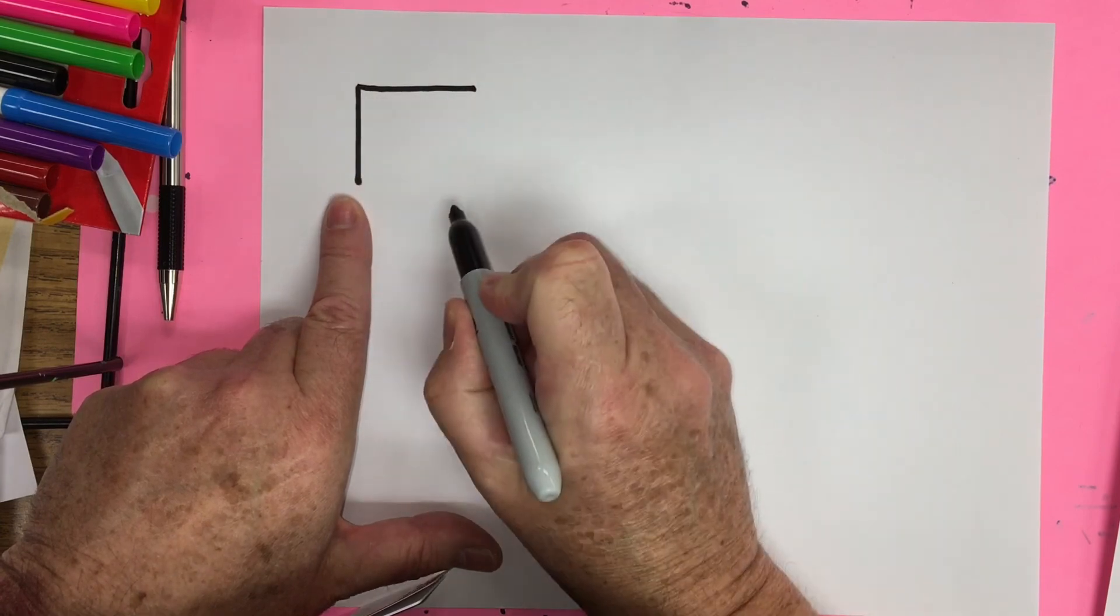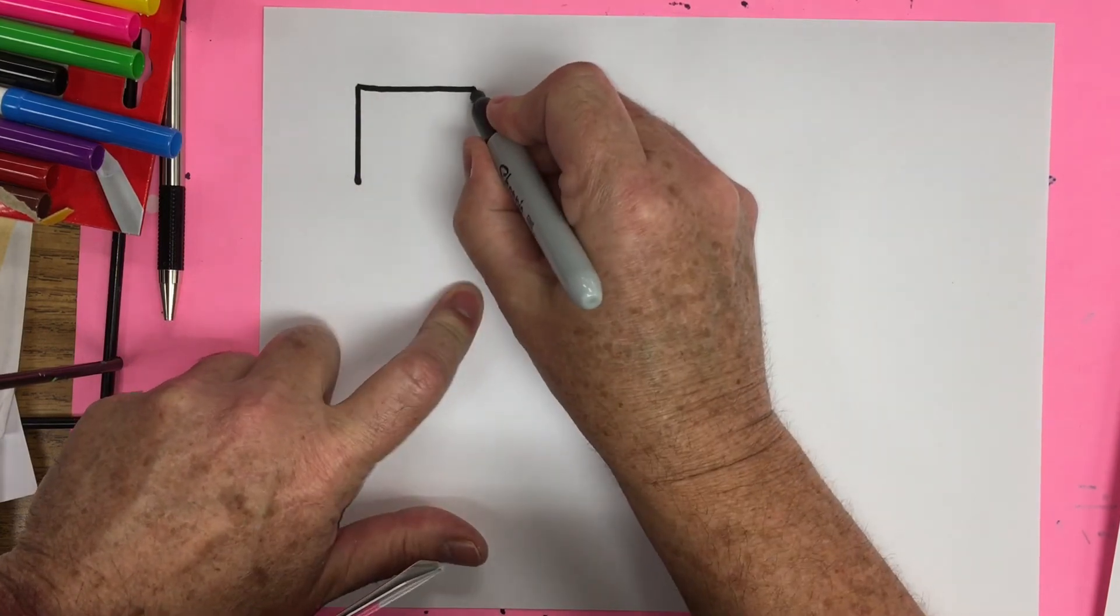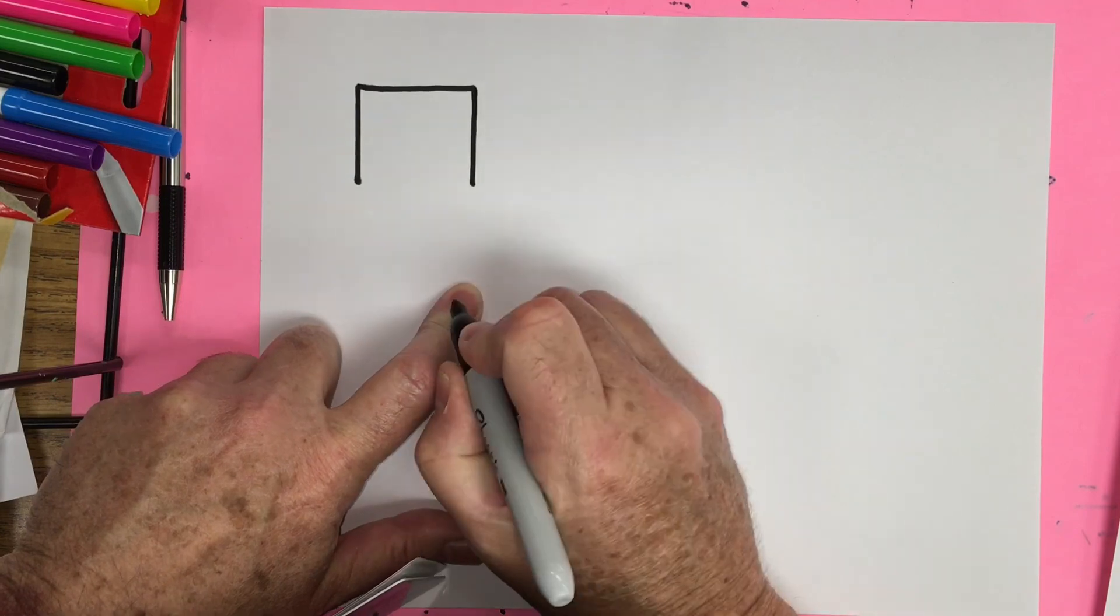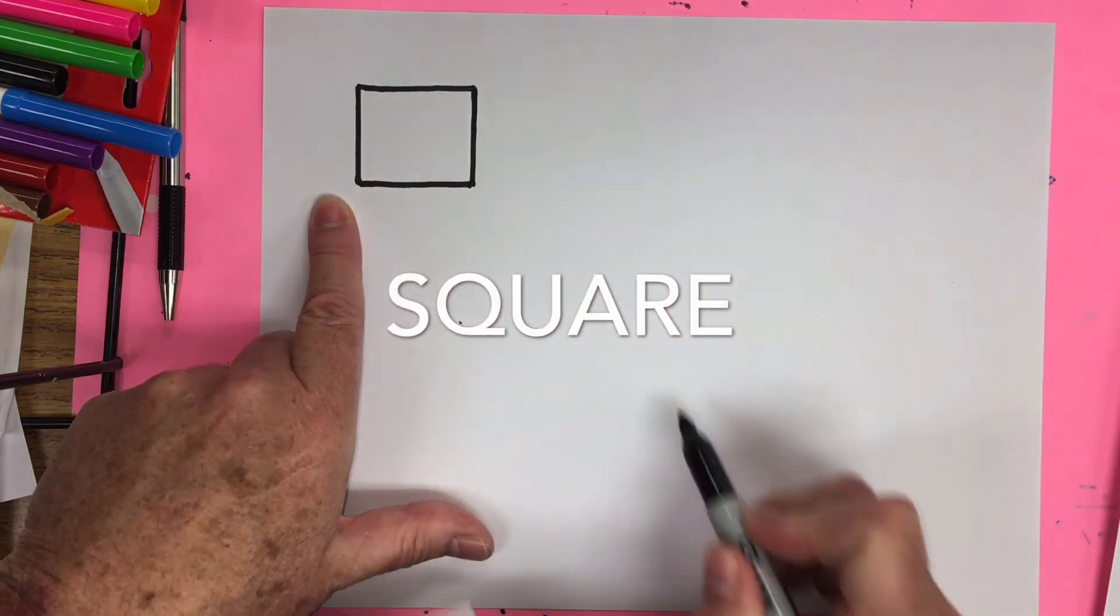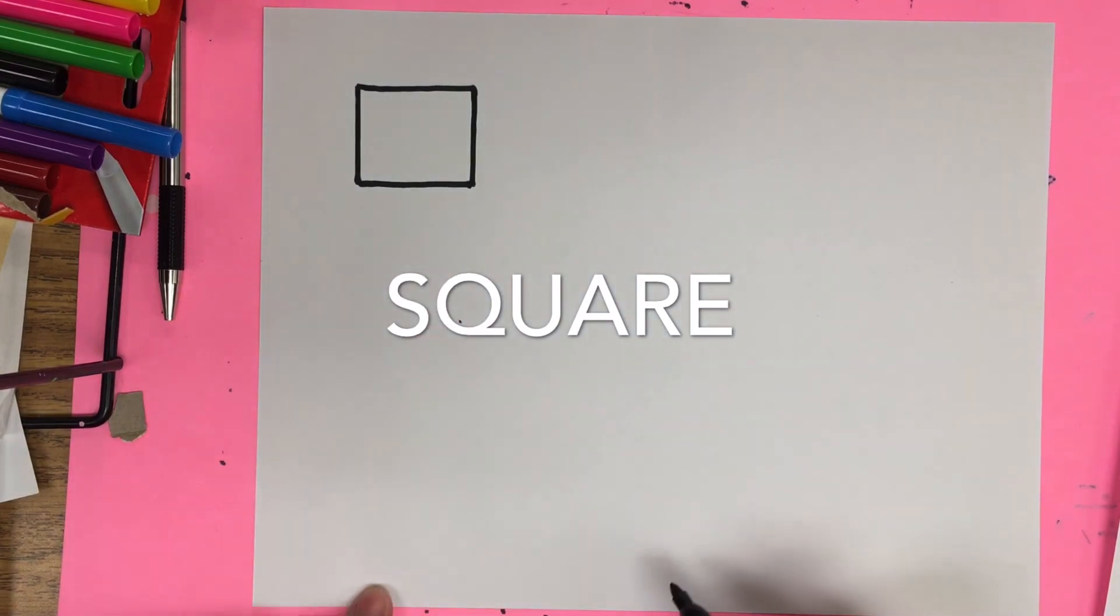Now we're going to go over straight across horizontally approximately the same length as this. So we're coming over and we're going to drop back down straight and then we're going to connect the two ends. And there is our square.